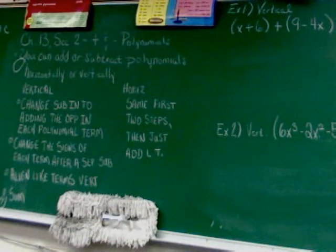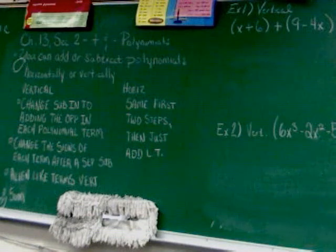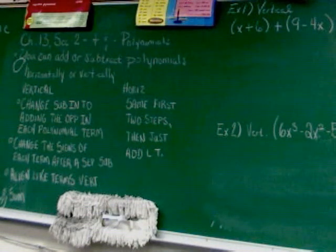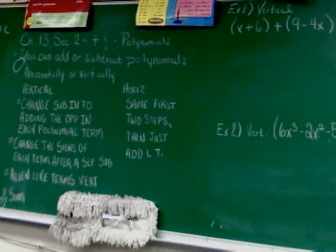For horizontal addition and subtraction, the first two steps are the same. But then we just put the like terms together — we don't take the time to set it up like elementary arithmetic; you just go for it.